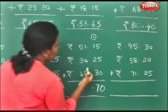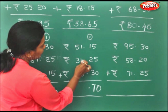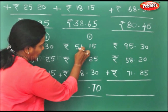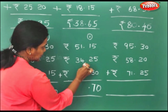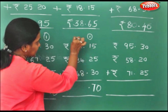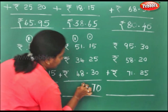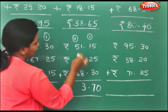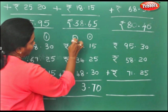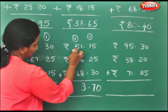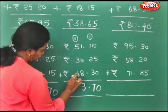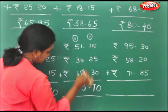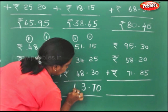Now moving on here. 8 plus 1 is 9. 9 plus 4 is 13. 10 plus 3 is 13.